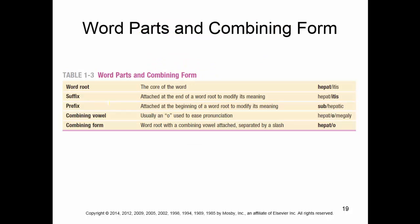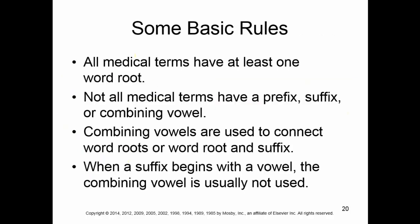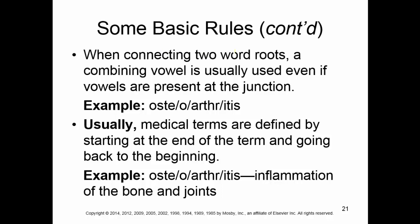Here's a summary: word root, suffix, prefix, combining vowel, combining form — this is on page 9 in your textbook. Basic rules: all medical terminology terms have at least one word root. Not all medical terms will have a prefix, suffix, or combining vowel. Combining vowels are used to connect word roots, or word roots to suffixes. When a suffix begins with a vowel, the combining vowel is usually not used. When connecting two word roots, a combining vowel is usually used even if vowels are present at the junction.